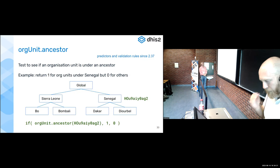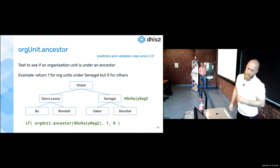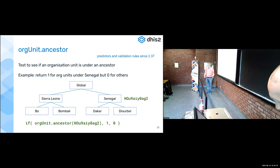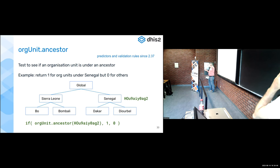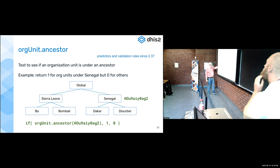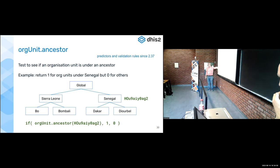Some other functions added recently: from version 2.37, you can have different calculation rules for different parts of your organization unit hierarchy. If you have an indicator you want to calculate differently for different countries, you can say if the org unit ancestor is somewhere under Senegal, do it one way; if it's under Sierra Leone, do it a different way. This org unit ancestor function gives that flexibility to your indicators.